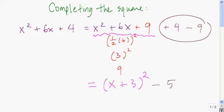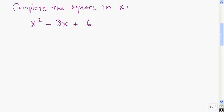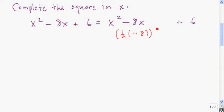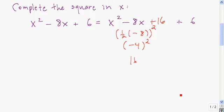I'm going to give you an example to try — press pause while you work on it. You're going to start off by putting the constant term off to the side. Next, find half of the coefficient of x and square it. Half of negative 8 is negative 4, and negative 4 squared is 16. So we add 16 right there and subtract it over here.